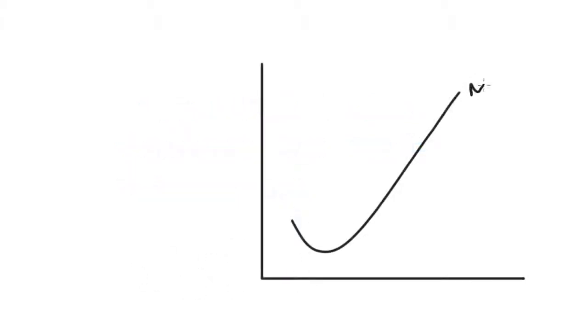In this video I'm going to explain why we often depict the marginal cost curve for the firm looking like a rounded tick shape like this one here. Our marginal cost curve is drawn with quantity on the horizontal axis and a measurement of costs on the vertical axis.